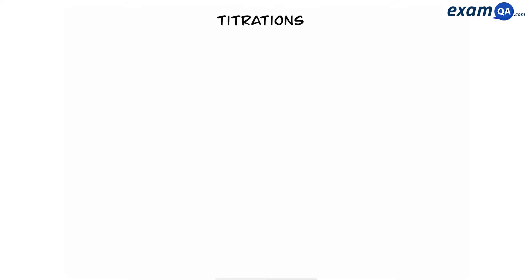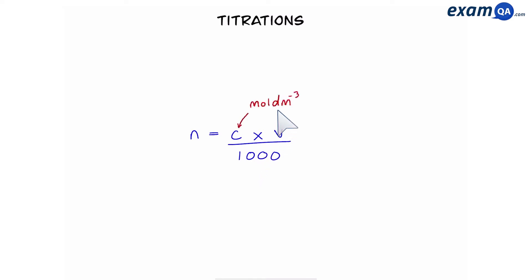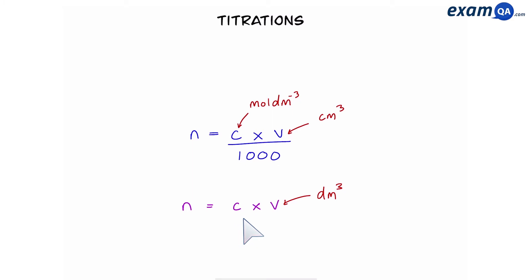Welcome. In this video we're going to be looking at titrations. Now we have to know this equation: number of moles is equal to concentration times volume over 1000. Concentration is always given in moles per decimetres cubed, and volume is given in centimetres cubed. However, we can also use number of moles is equal to concentration times volume, if it's given to you in decimetres cubed.